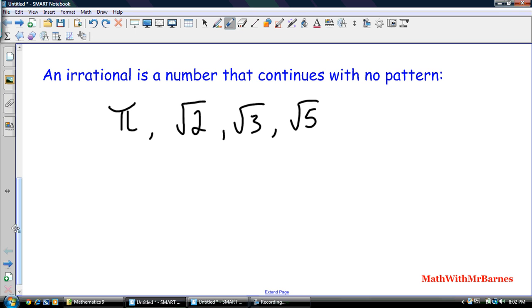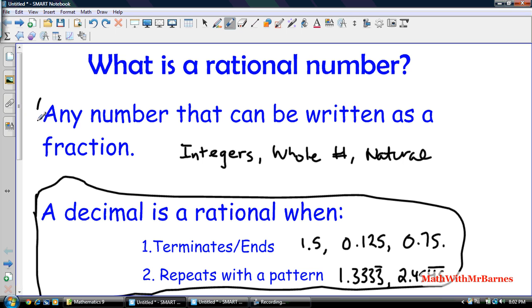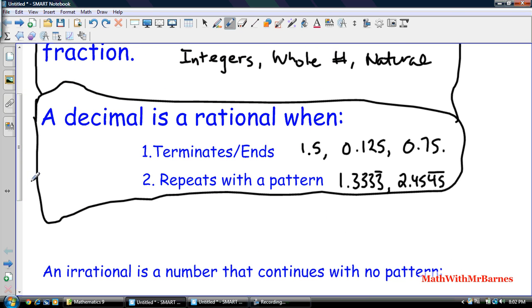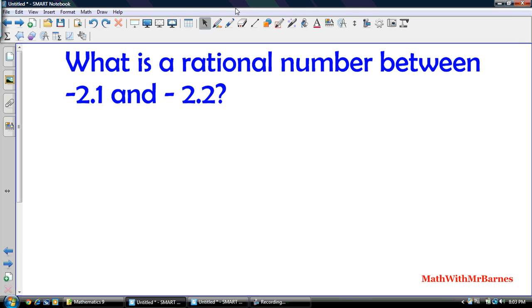All right, so hopefully that clears up the definition of a rational number. Again, it's not overly complicated. Your book made it a little bit more complicated than it needed to be. But a rational number is any number that can be written as a fraction. A decimal is a rational number when it terminates, ends, or repeats with a pattern. All right, let's give an example of what type of question you might find on a test, or assignment, or midterm, or final exam.